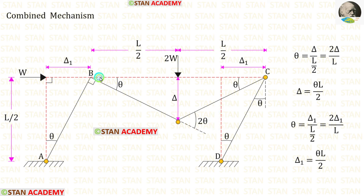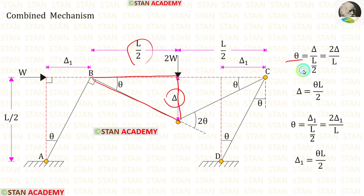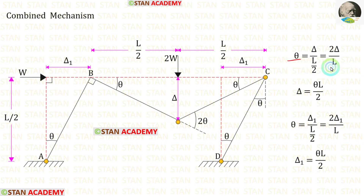Taking the triangle, theta equals delta upon L/2, so delta equals theta L upon 2. Both delta 1 and delta equal theta L upon 2.